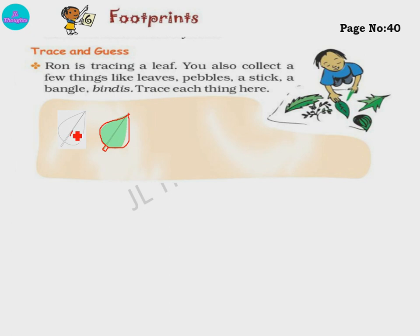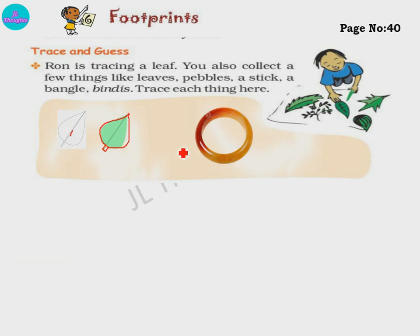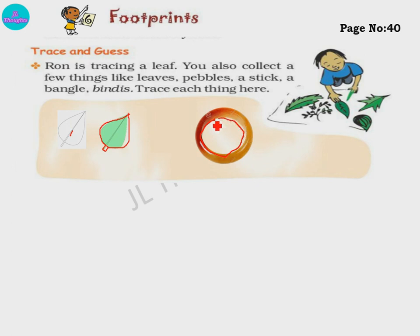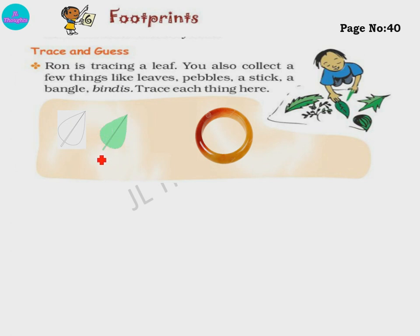Similarly, you can take a bangle. When you trace inside the bangle you get a smaller circle, and if you trace the outside you get a bigger circle. Tracing means taking an object and tracing exactly around it. When objects are like this, you can trace inside also or outside also. Collect a few objects and trace them.